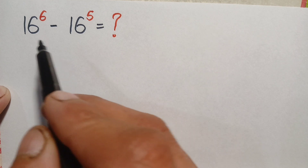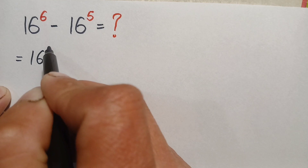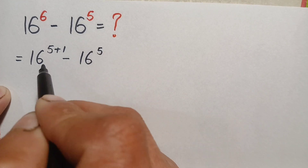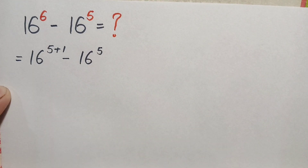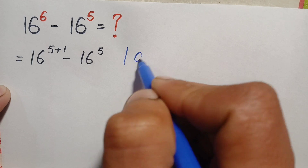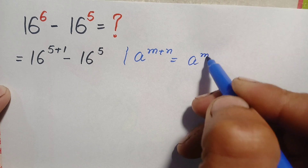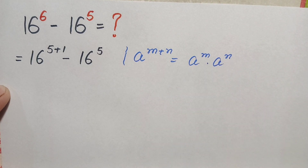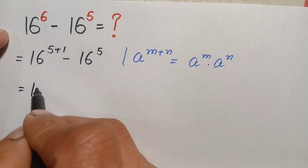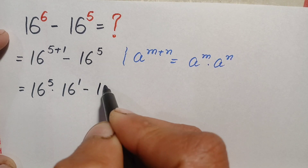First, we can rewrite the first term 16 to the power 6, where the exponent 6 is written as the sum of 5 plus 1. We then apply the exponential identity a^(m+n) = a^m · a^n. Using this identity, the first term becomes 16 to the power 5 times 16 to the power 1, minus 16 to the power 5.